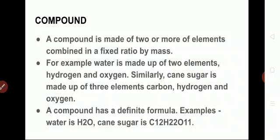Next, we are going to see the definition of a compound. A compound is made of two or more elements combined in a fixed ratio by mass. For example, water has the formula H₂O — there are two hydrogens and one oxygen. Water always carries two parts hydrogen and one part oxygen; it is a fixed ratio. So a compound is always formed by a fixed ratio by mass.